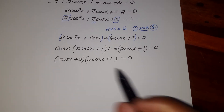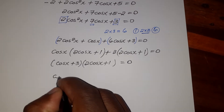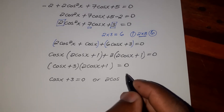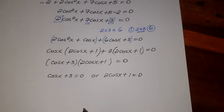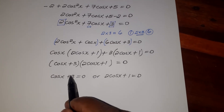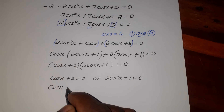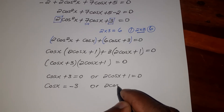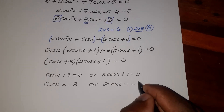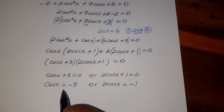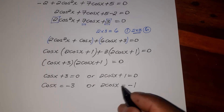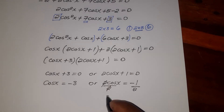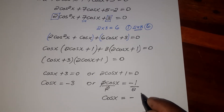We equate each bracket to zero: cosine X plus 3 equals zero, or 2 cosine X plus 1 equals zero. From the first: cosine X equals negative 3. From the second: moving the 1 across gives 2 cosine X equals negative 1, and dividing both sides by 2 gives cosine X equals negative one half.